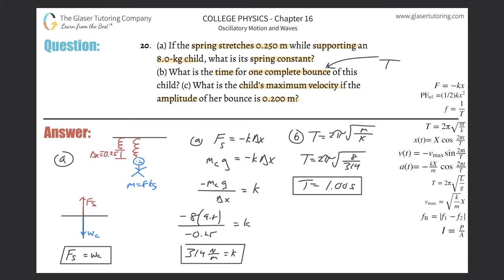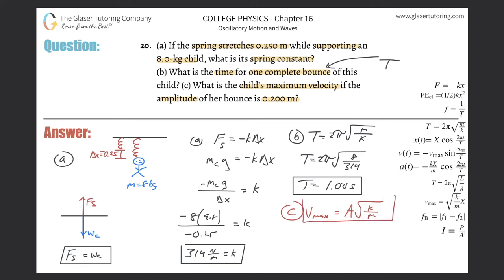Letter C: what is the child's maximum velocity if the amplitude of her bounce is 0.2 meters? For this we use the formula: v_max equals the amplitude times the square root of the spring constant divided by mass. I prefer writing it with amplitude (A) rather than big X to avoid confusion.